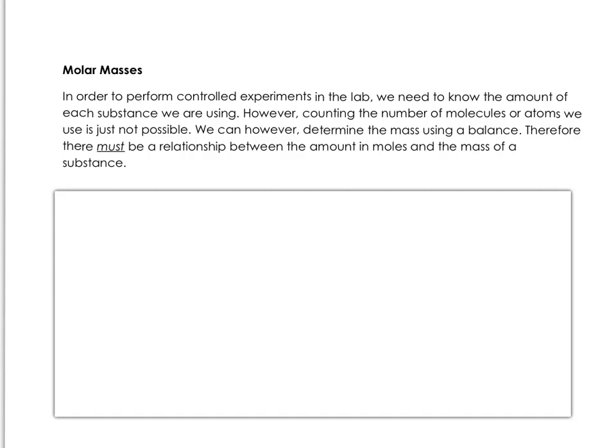Now we're going to deal with moles and molar masses. In order to perform controlled experiments in the lab, we need to know the amount of each substance we're using. Counting the number of molecules or atoms is just not possible. However, we can determine the mass using a balance. Therefore, there must be a relationship between the amount in moles and the mass of a substance.